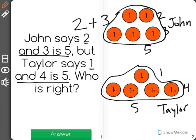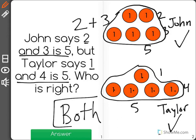So John says that 2 and 3 is 5, and he was right. Taylor says that 1 and 4 is 5, and she was right. So both John and Taylor are right.